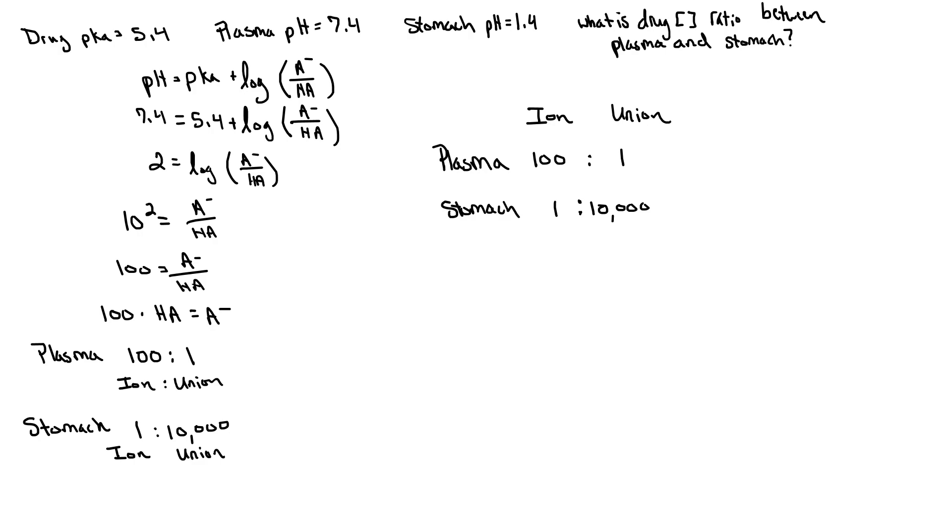So the final step in this is to realize that in equilibrium what matters is our unionized form. Because the unionized form can flow between cell walls, this concentration always needs to be equal between our compartments in the body. So in this case we would need to either multiply the entire plasma row by 10,000 or we need to divide the stomach row by 10,000.